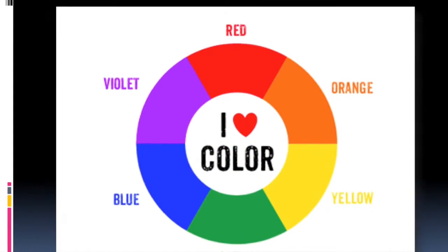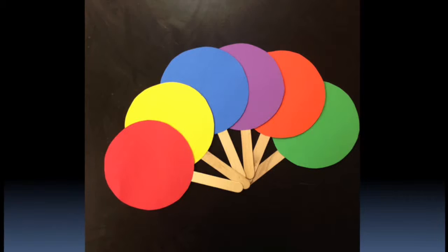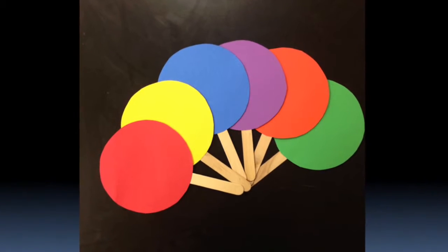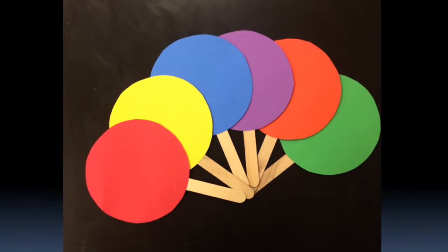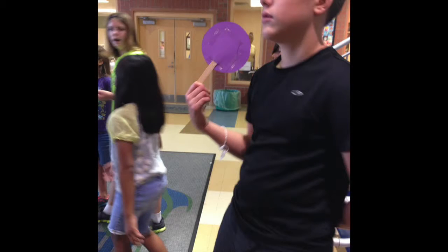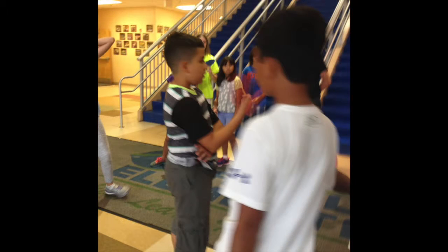The first thing we had to do was review what we knew about color theory up until this point. I love to get the kids up and moving as much as I can, so for a quick color wheel review, I took them out of the classroom, gave them dots of primary and secondary colors, and had them get into teams to create a color wheel.